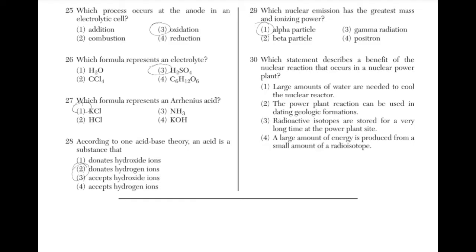Which statement describes the benefit of the nuclear reaction that occurs in a nuclear power plant? Only answer choice 4 is a benefit among these options. You would not want to use large quantities of water to cool the reactor. Dating geological formations isn't a benefit either. And you would not want isotopes to have to be stored for a long time, as it poses a risk for people who live nearby.